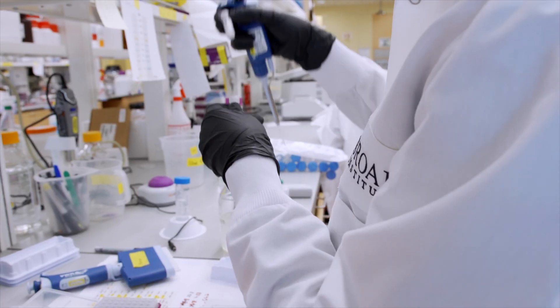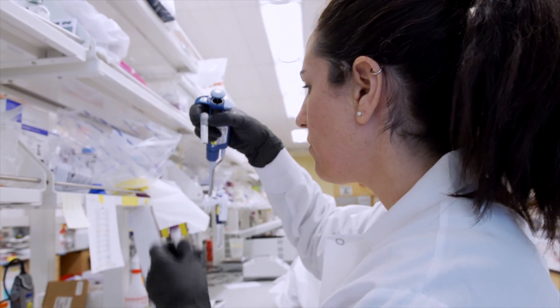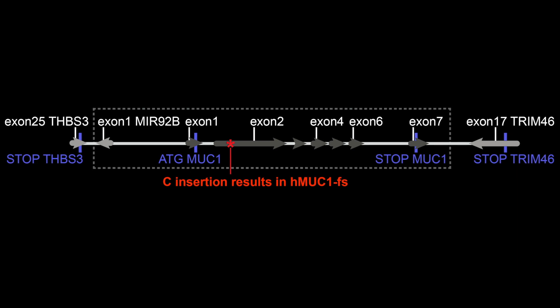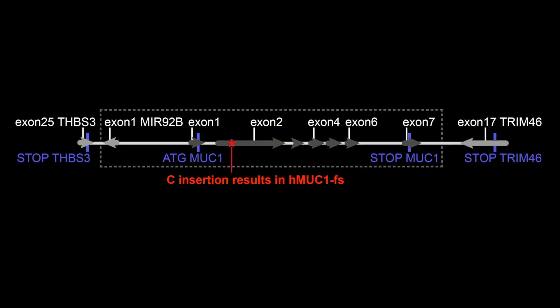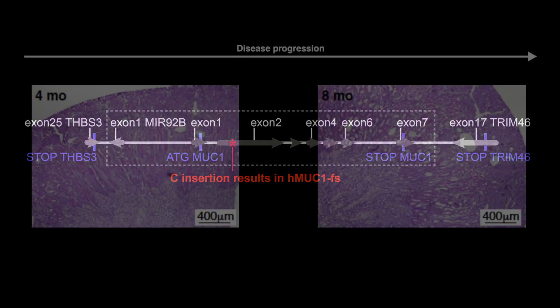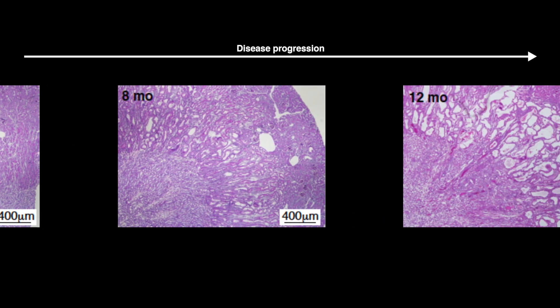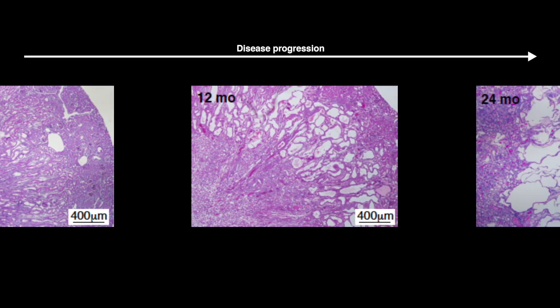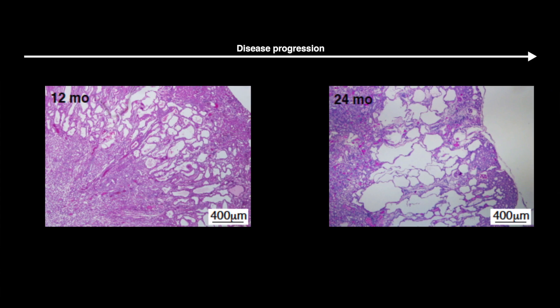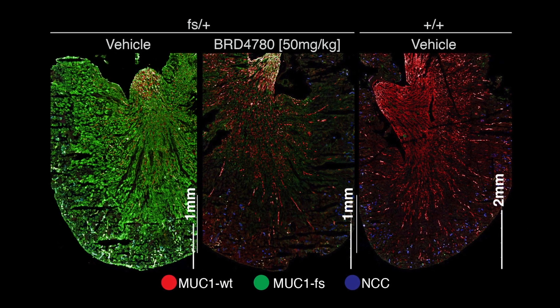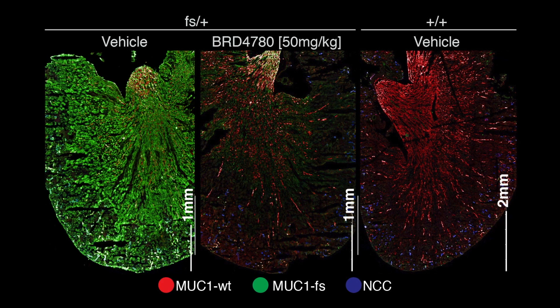In order to test if our compound would work in conditions more close to the patient system, we tried it in different additional systems. One of these was our model mouse, which had a knock-in frameshift gene in their genome and developed a pathology phenotype close to what patients are developing. Oral administration of this compound totally cleared the tissue sections from frameshift protein.